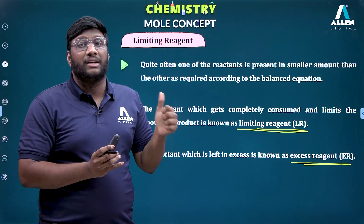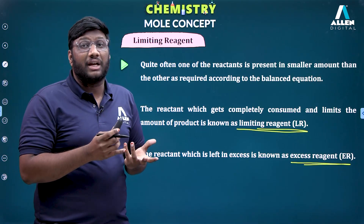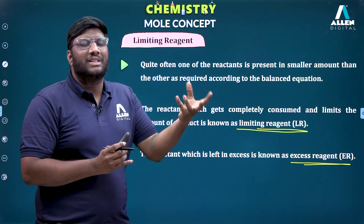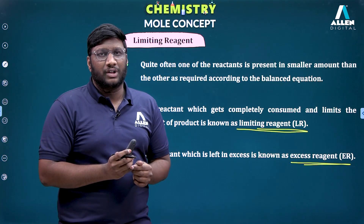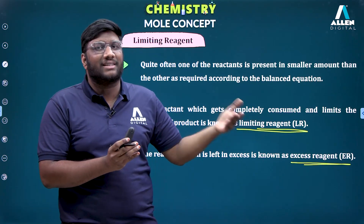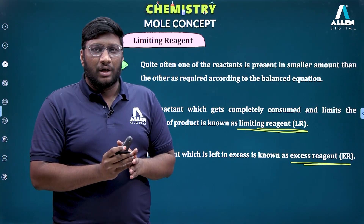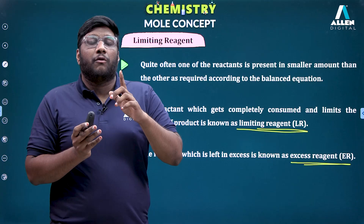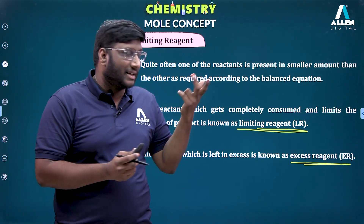How do we identify the limiting reagent in a reaction? To identify which reactant is going to limit the reaction, we need a balanced chemical equation. From the balanced equation, we can find out how many moles of one reactant are required for a given number of moles of the other reactant. Combined with the given data, we can find out which reactant is in lesser and which is in greater quantity.